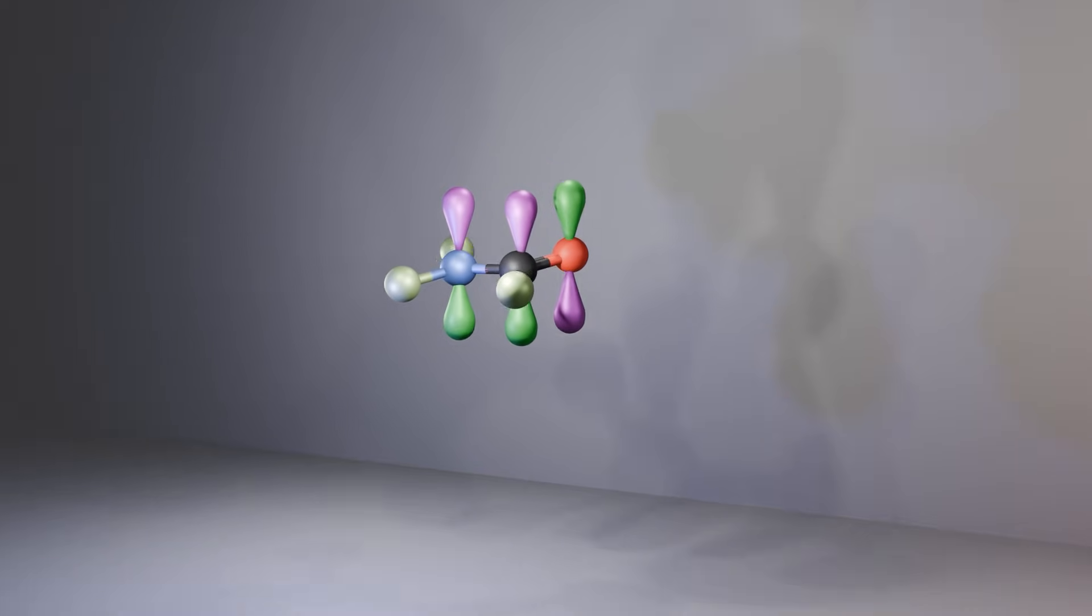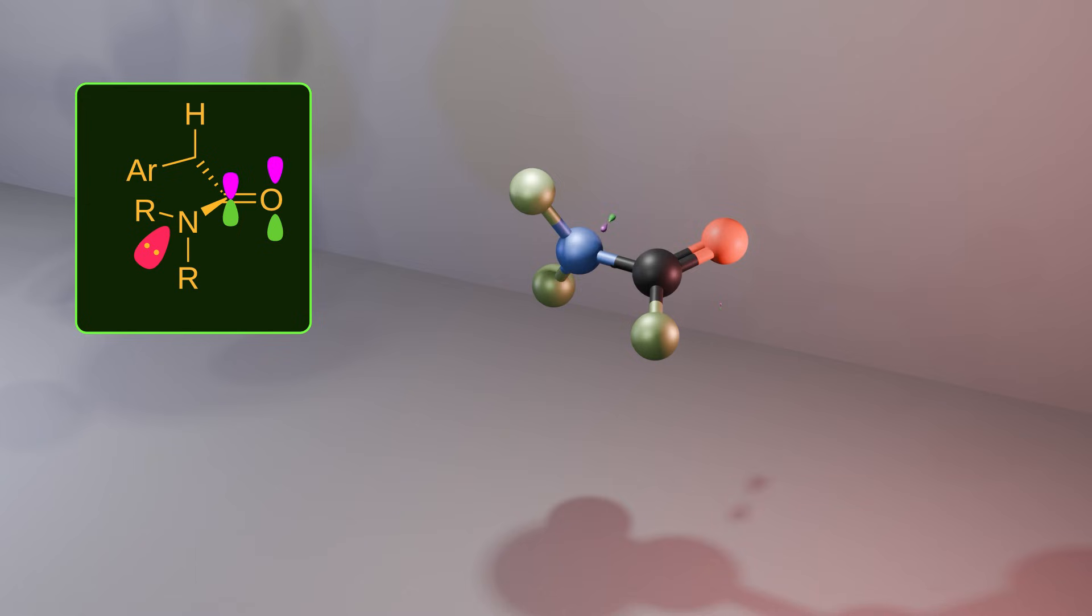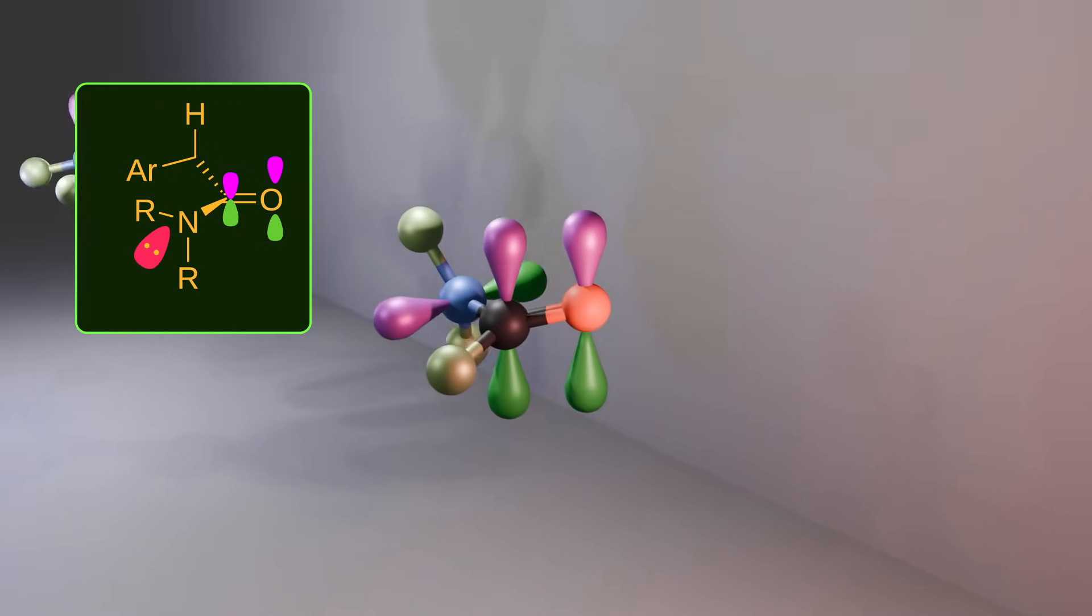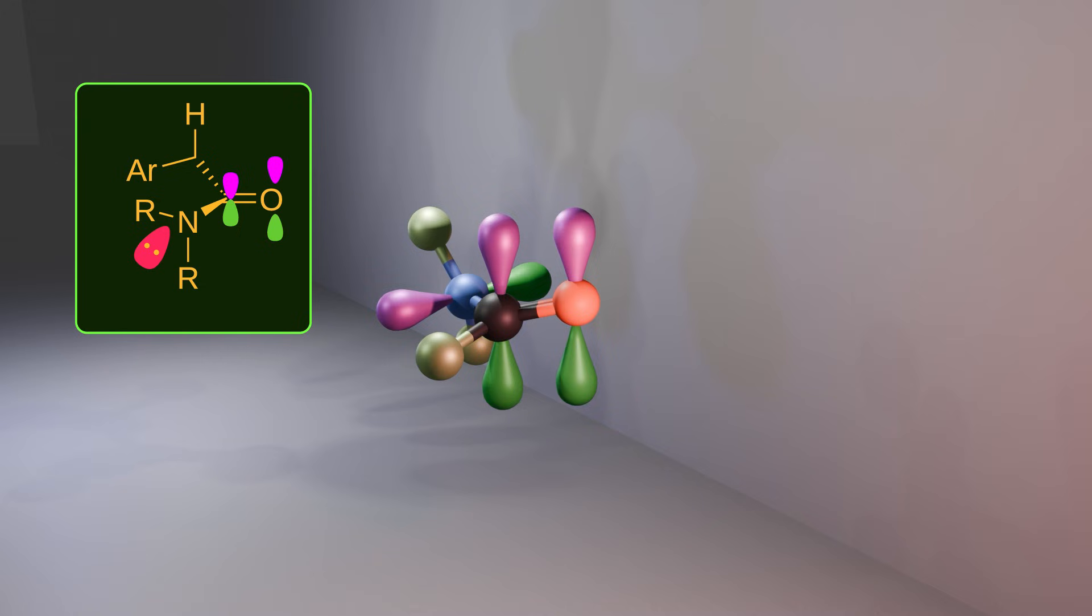But what happens when we rotate the carbon-nitrogen bond? In this new conformation, the non-bonding orbital of the nitrogen atom becomes perpendicular to the pi system. So there is no resonance. This conformation is called twisted conformation.